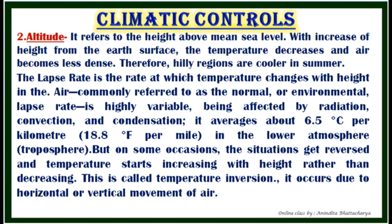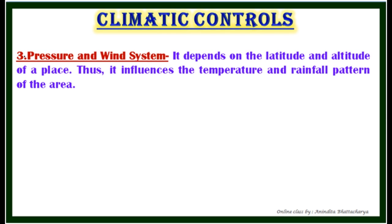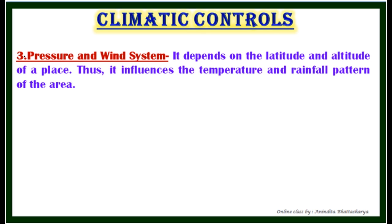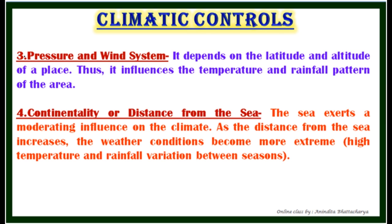The next climatic control is pressure and wind system. It depends on the latitude and altitude of a place and influences the temperature and rainfall pattern of the area. When temperature is high, air pressure is low; when temperature is low, air pressure is high. The next control is continentality, or distance from the sea. The sea exerts a moderating influence on the climate; as the distance from the sea increases, weather conditions become more extreme — meaning high temperature and rainfall variation between seasons.